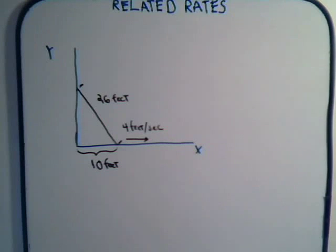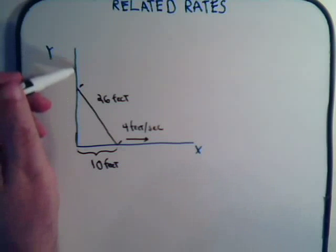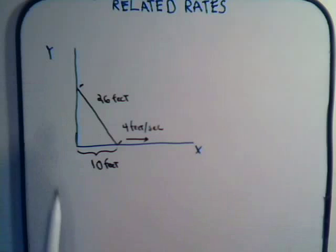So, the way we have this sketched out, the floor is the x-axis, the vertical wall is the y-axis, and we know what dx/dt is.